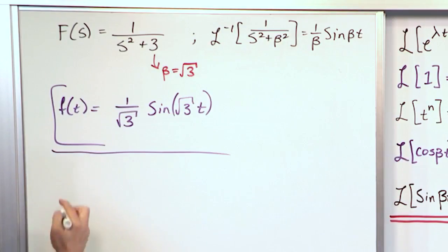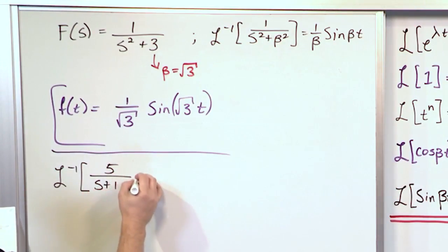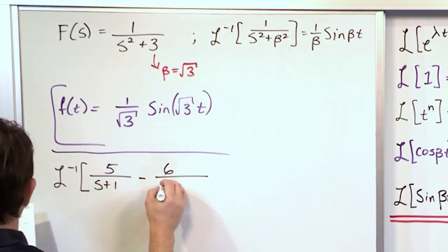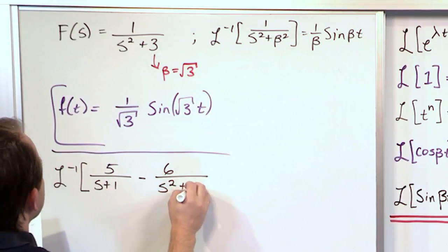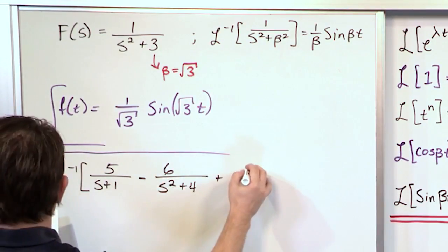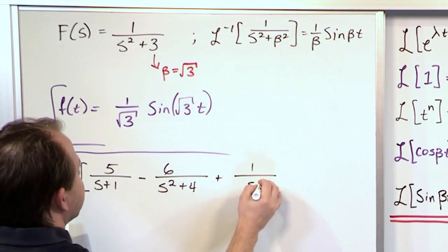Let's take the inverse Laplace transform of the following larger function, 5 over s plus 1, minus 6 over s squared plus 4, plus 1 over s to the fourth. So this is a linear combination. This is a large function.